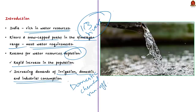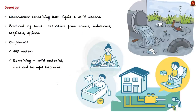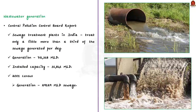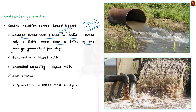What is sewage? Sewage is the wastewater containing both liquid and solid waste produced by human activities from homes, industries, hospitals, offices, etc. Sewage is more than 99% water, but the remaining material contains solid material, ions and harmful bacteria. A report released by the Central Pollution Control Board, compiled on the basis of information from state pollution control boards, says that sewage treatment plants in India are able to treat a little more than a third of the sewage generated per day.